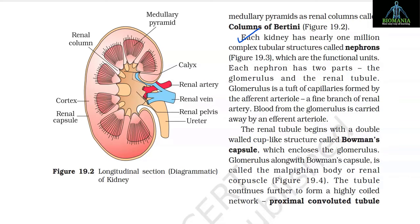Each kidney has nearly one million complex tubular structures called nephrons, which are the functional units. Each nephron has two parts: the glomerulus and the renal tubule. The glomerulus is a tuft of capillaries formed by the afferent arteriole, a fine branch of the renal artery. Blood from the glomerulus is carried away by an efferent arteriole. The renal tubule begins with a double-walled cup-like structure called Bowman's capsule, which encloses the glomerulus. The glomerulus along with Bowman's capsule is called the Malpighian body or renal corpuscle.